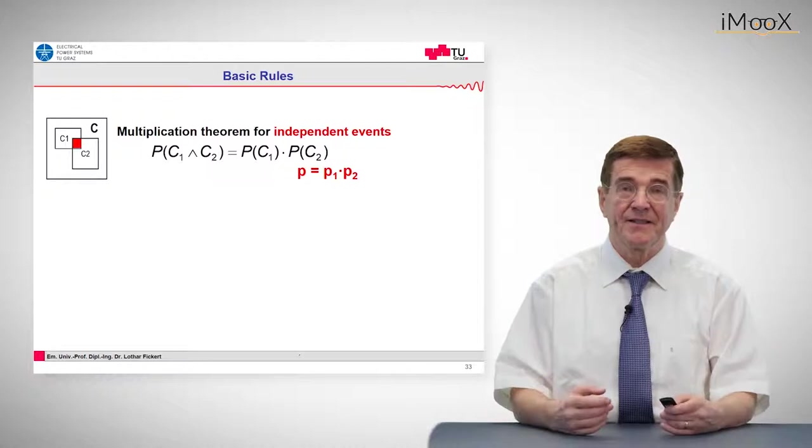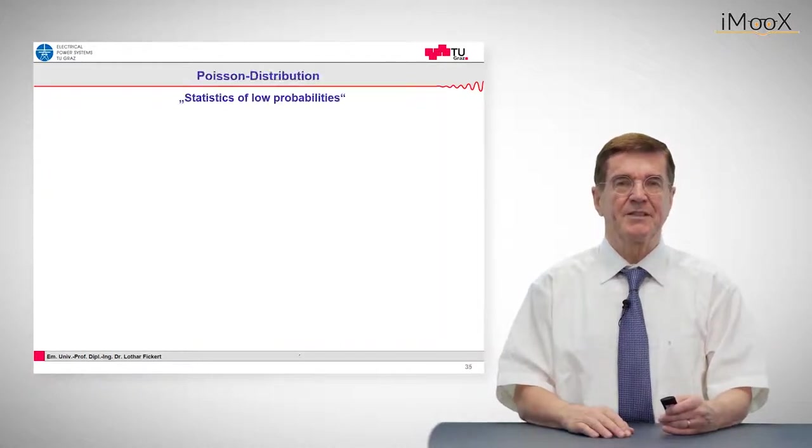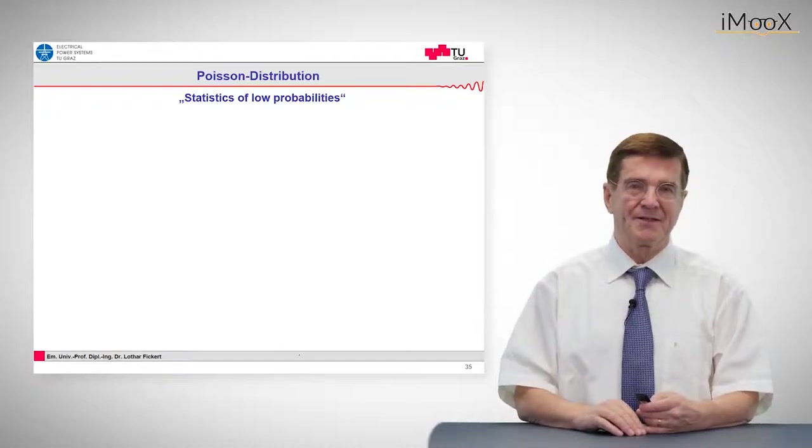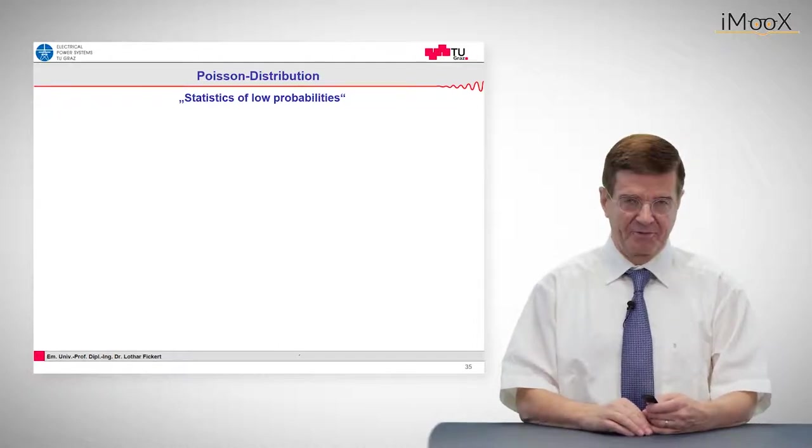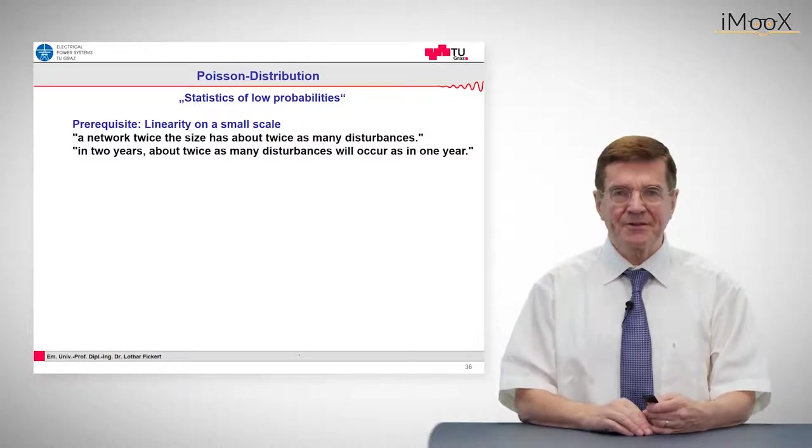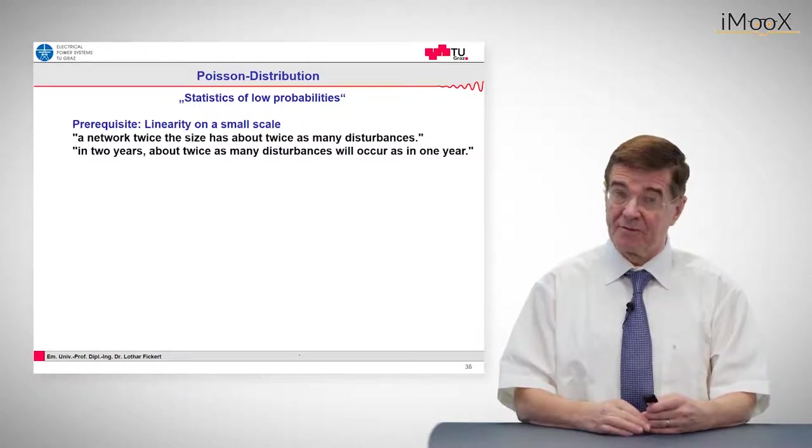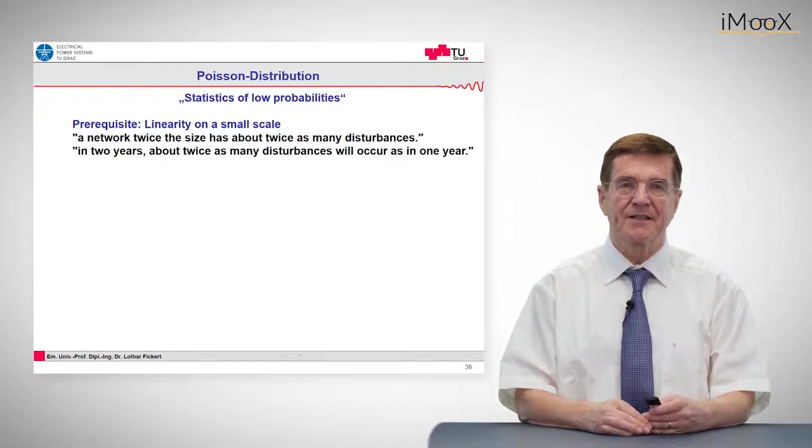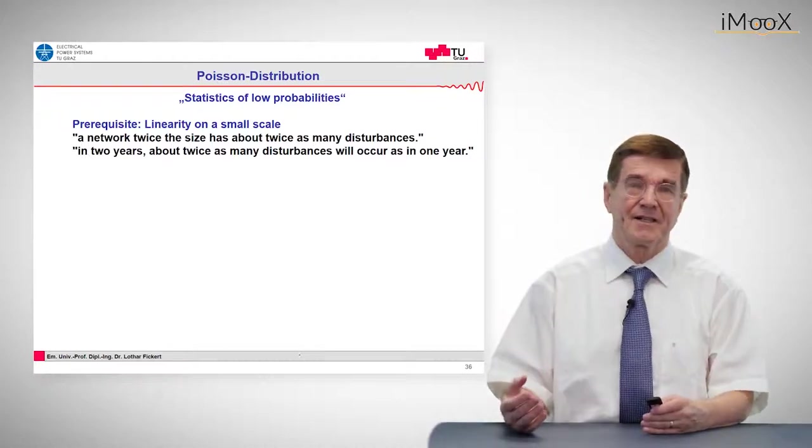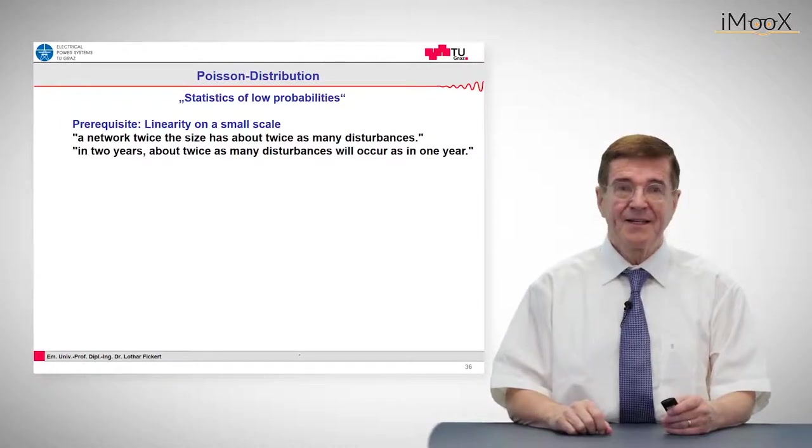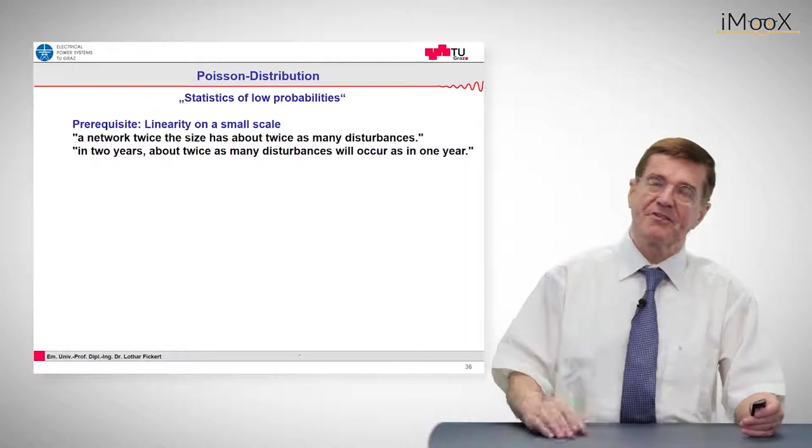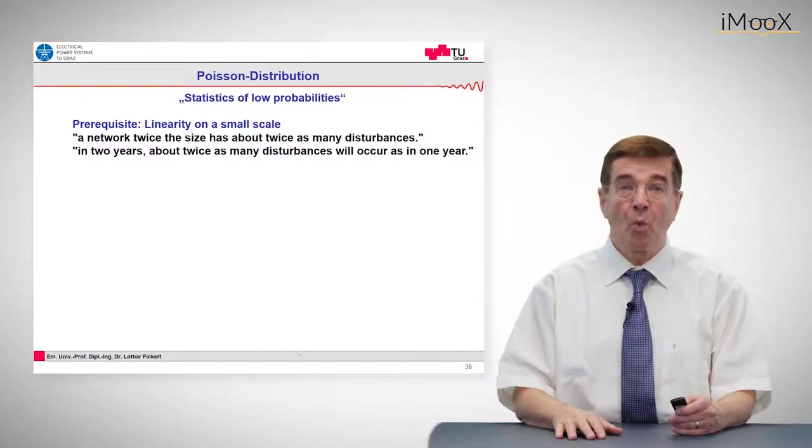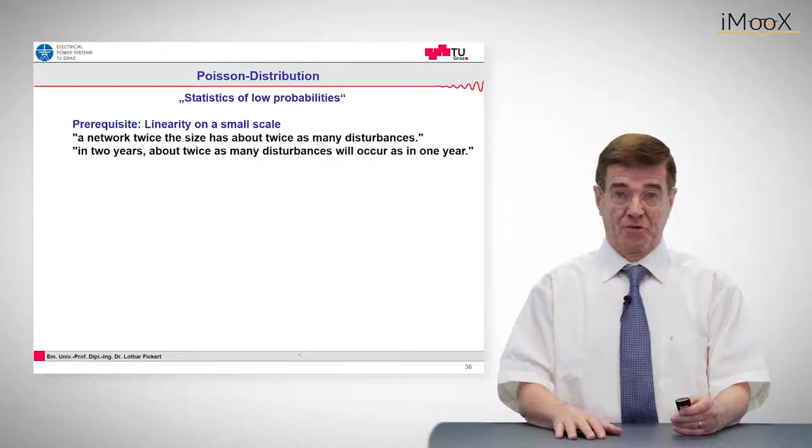Now we apply this to probabilities in system operation. In system operation we apply the stress statistics of low probabilities, which is the so-called Poisson distribution. The prerequisite to apply this is in electrical networks more or less plausible. It means we need linearity on a small scale. That means if a network is twice as large, it will have double the incidents. If you have two years, you have double the value on average as you would have for one year only.